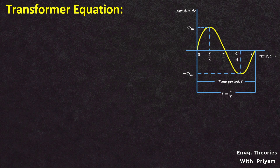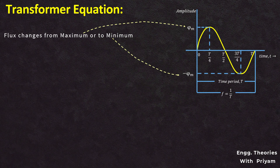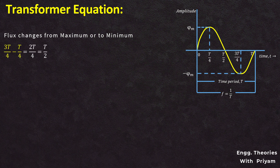The flux changes from maximum plus φm to minimum minus φm. The flux is maximum when time t equals T/4, and minimum when t equals 3T/4. So the time required for the flux to change from maximum to minimum is equal to 3T/4 minus T/4, which equals 2T/4, simplified as T/2, or 1/(2F) seconds, since T equals 1/F.